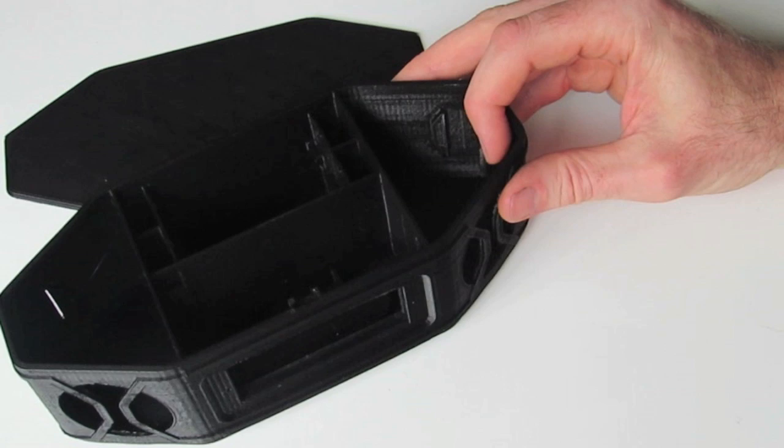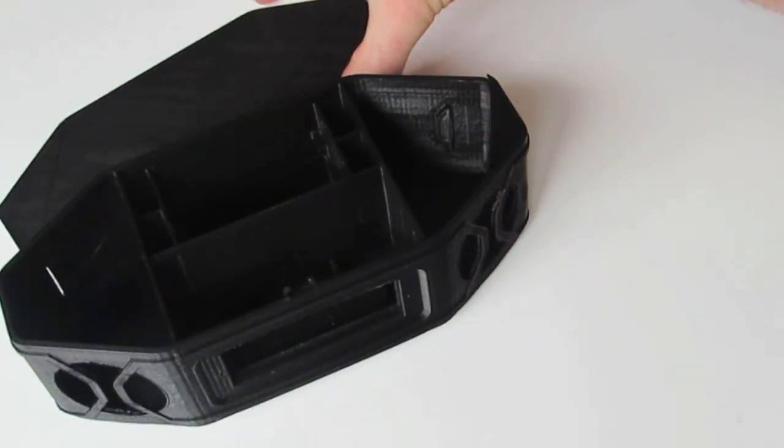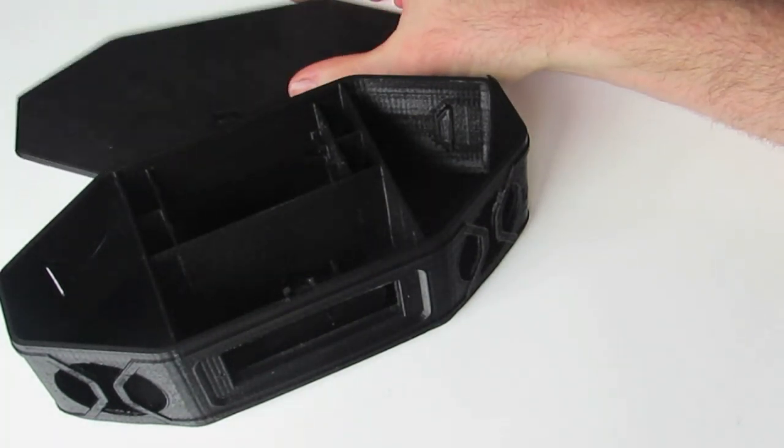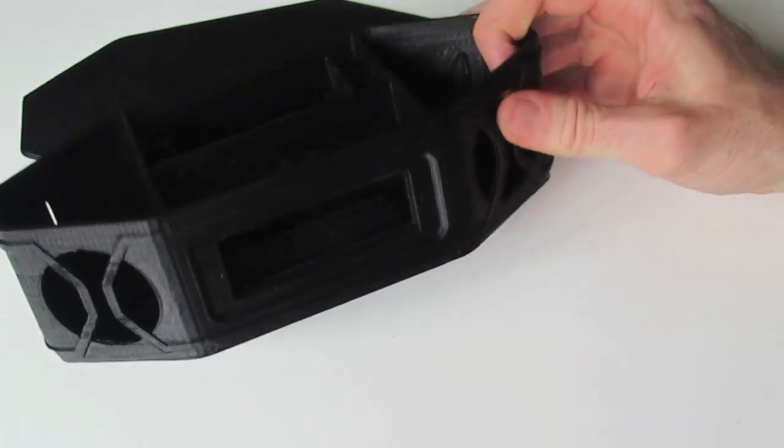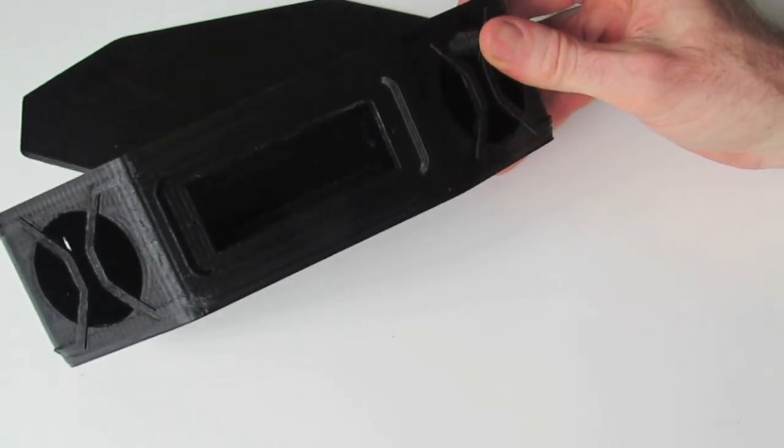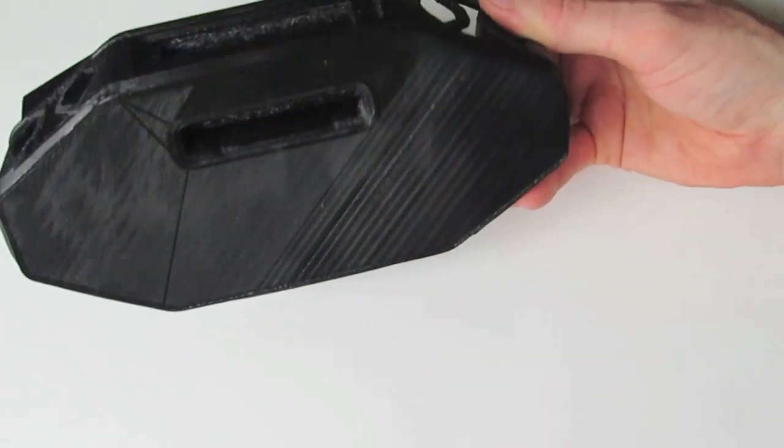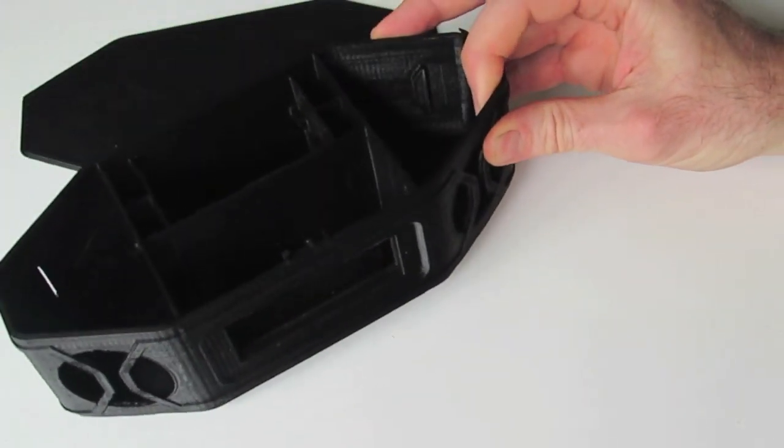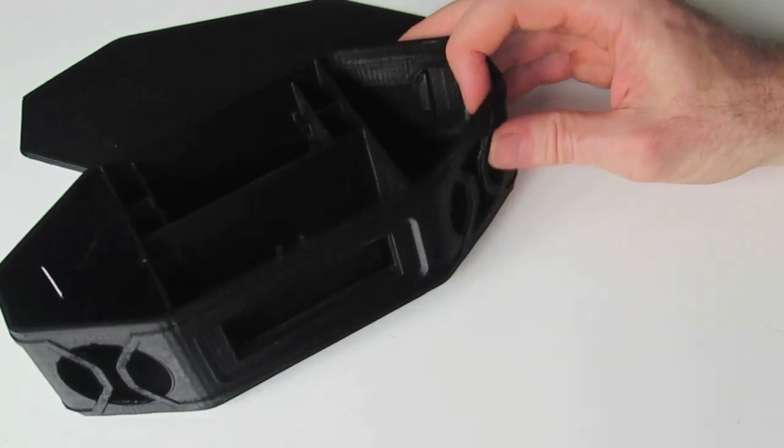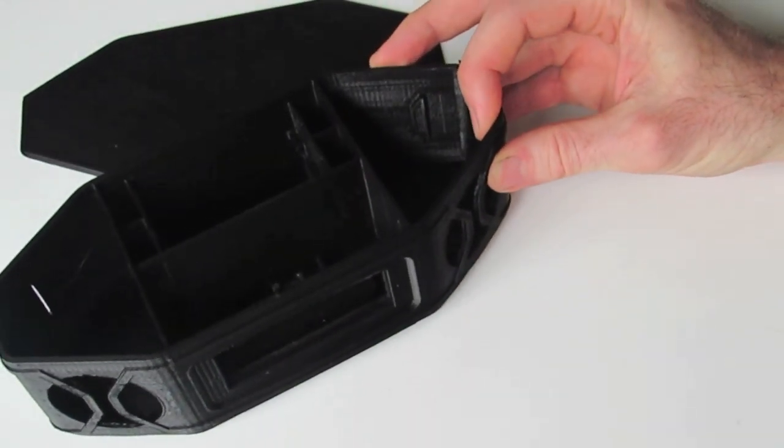We've only got two parts in this project. We have our main case here and we also have our lid or the bottom which covers and closes the case. This main case here is a fairly straightforward print, it is a big print though. This took about 10 hours to print. The key thing here being a larger part is making sure that you have very good adhesion. If you've got a heated glass bed, obviously that will be of great benefit to you. Otherwise, make sure that you're using tape or whatever method that works well for you and your printer.